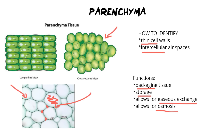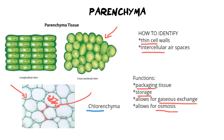A special mention for parenchyma that has chloroplasts in it: regular parenchyma doesn't have any chloroplasts, but a special form that does we call chlorenchyma. They're normal parenchyma but now they've got chloroplasts inside, which means they can photosynthesize. This is often the parenchyma you can see on the surface of a stem — it's what makes the stem green and fleshy.